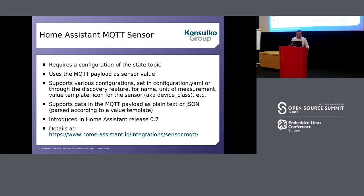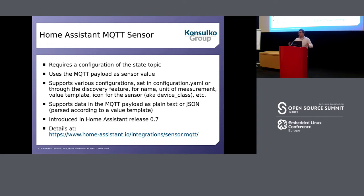A few words about each of the three example MQTT components. The first is the most simple MQTT sensor, which I use to implement temperature reading. It requires configuration of the state topic — you specify what topic to receive information from. The payload of the message is the sensor value; it can be plain text or JSON, as a matter of configuration. There are other settings you can configure — for example, the unit of measurement, so you can specify whether the value is in Fahrenheit or Celsius. This was introduced in Home Assistant 0.7, and there is excellent documentation at the link provided.